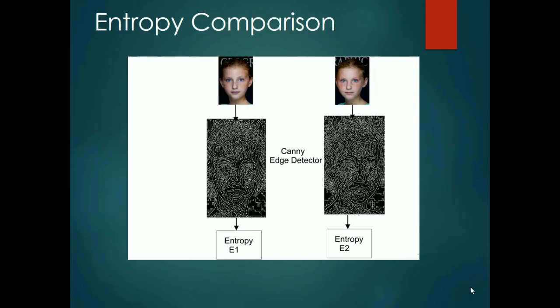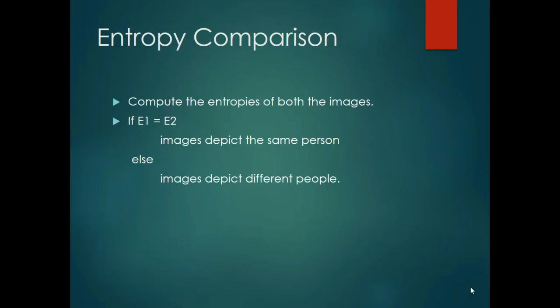The entropies of both images are calculated. Let the entropy of the image of twin A be E1, and the entropy of the image of twin B be E2. Once the entropies have been computed, if E1 equals E2, then the images depict the same person. If they are not equal, the images depict different people.